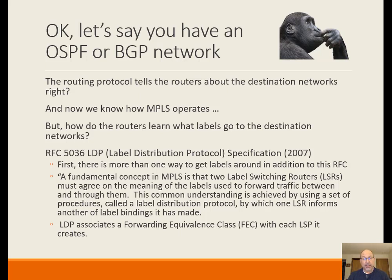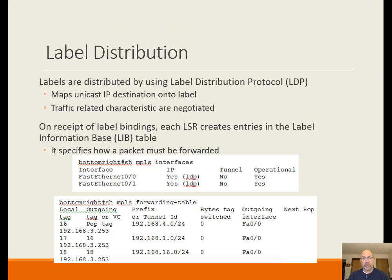The forward equivalence class is the handling that all packets going along the label switch path are organized by. When you turn on the label distribution protocol, the routers start communicating and build a table of bindings for destination networks and the labels that have been distributed. As shown by the 'show MPLS forwarding table' output, tags 16, 17, and 18 are tied to particular destination networks with an outgoing interface associated with each. We can also see which interfaces are using the label distribution protocol as defined by RFC 5036.